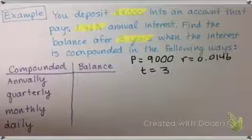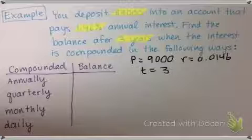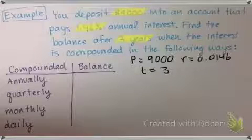So they want us to know when it's annually compounded, meaning once per year, quarterly, meaning four times a year, monthly, meaning 12 times a year, and daily, meaning 365 per year.